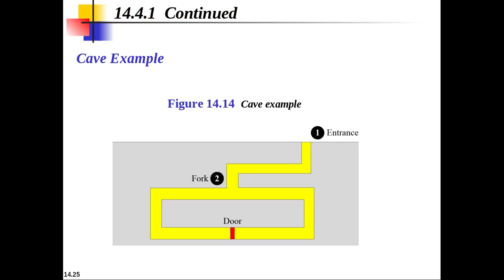To understand this, there is an example known as the cave example. Suppose there is an underground cave with a door at the end that can be opened with a magic word. Alice claims she knows the magic word. Both Alice and Bob start at the entrance — point one. Alice enters and reaches point two, the fork. Bob cannot see Alice because Alice is at point two and Bob is at point one. Alice can choose to go either left or right, which corresponds to sending the witness x.